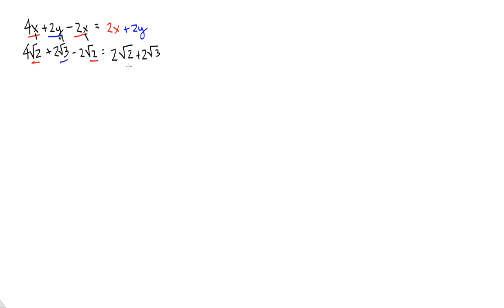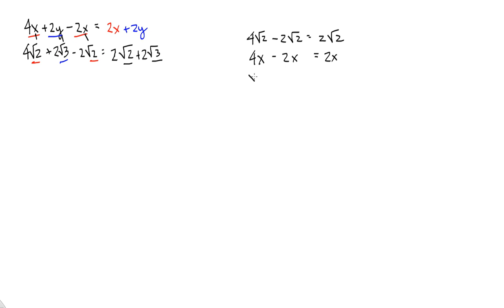So in terms of like terms — when we talk about like terms with adding and subtracting radicals, we're talking about the radical portion giving you the like terms. There are two ways to get that answer. You could just say 4 radical 2's minus 2 radical 2's gives me 2 radical 2's. But another way would be to factor out a radical 2: you'd have 4 minus 2, factor out the radical 2, and 4 minus 2 is 2 radical 2. Just another way of looking at it, but I think by far the easiest way is to say I have 4 radical 2's, I'm taking away 2 radical 2's, so I'm left with 2 radical 2's.